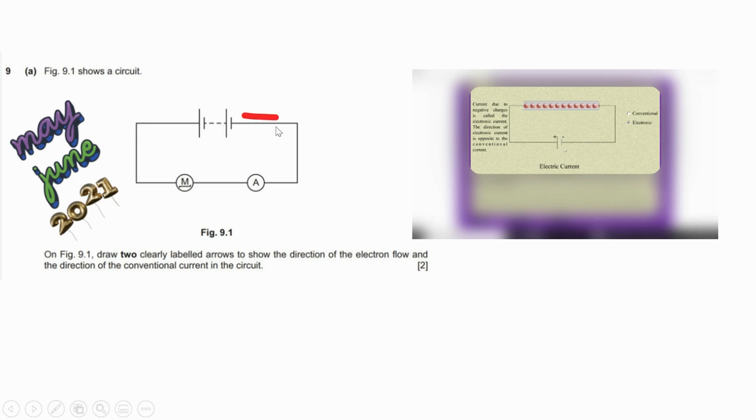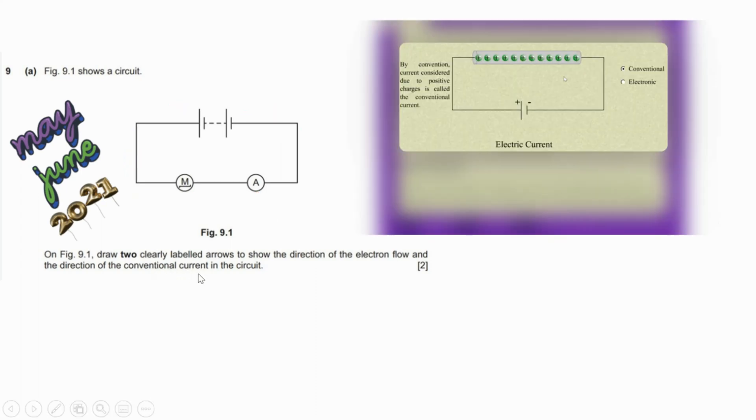For the conventional current, the flow of positive charges from the positive terminal to the negative terminal, draw arrows from the positive to the negative terminal.